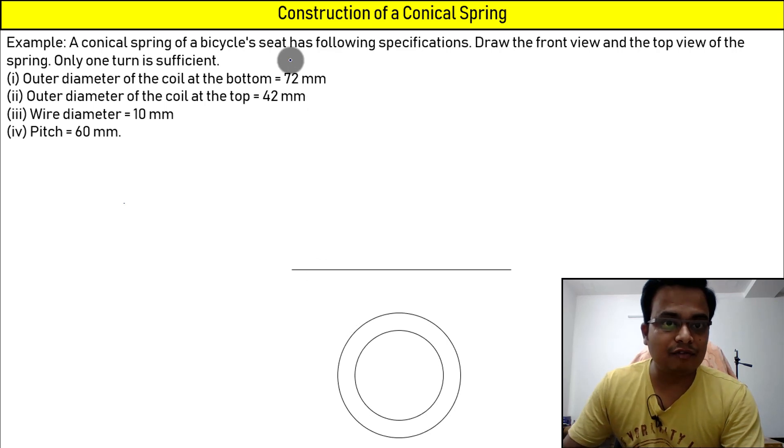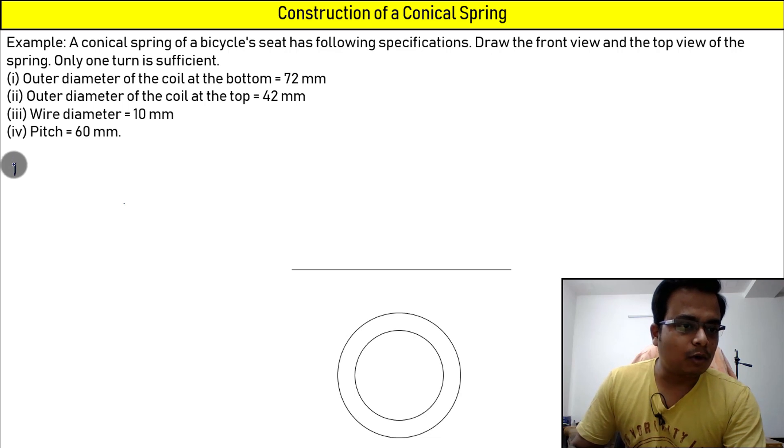Let me just write this: bottom coil. So bottom coil, the data are 72 is outer and inner is how much? Inner is going to be 52.